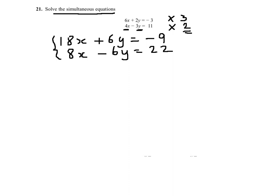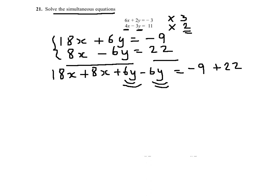Now what I will do is I will add up the two equations. So I will get 18x plus 8x plus 6y minus 6y equals minus 9 plus 22. As you can see, plus 6y and minus 6y will disappear and I will have 18x plus 8x, which is 26x, will equal to 13.